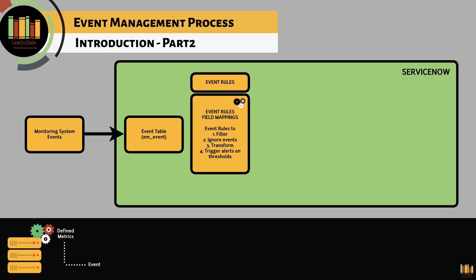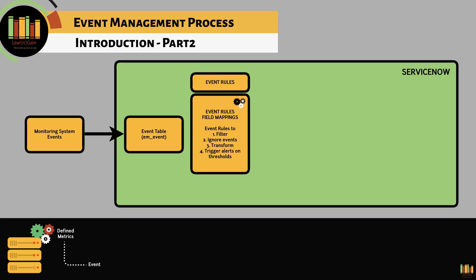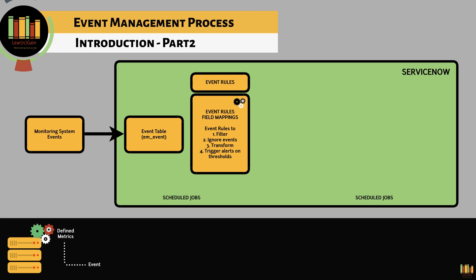Events are processed through event rules and event field mappings. You can configure event rules to filter or ignore events, transform to the desired output, and trigger alerts based on certain thresholds. Event management consists of several scheduled jobs that are executed in the background for event processing.